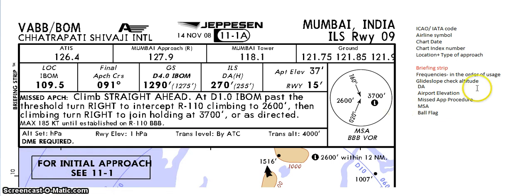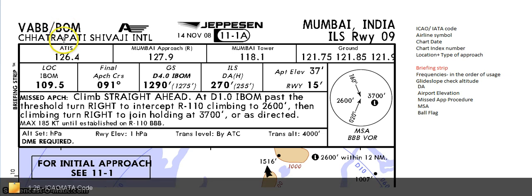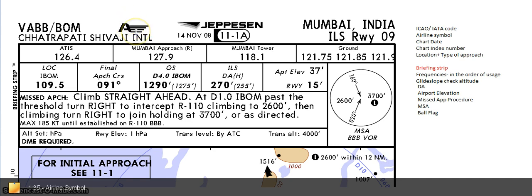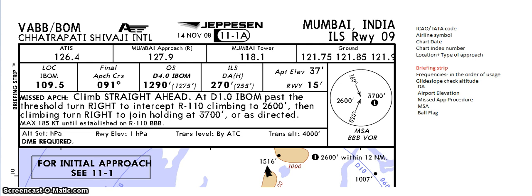For your convenience, on the right side of the page I have mentioned the most important things that we would be covering. In the top left you can see VABB slash BOM — the first one is the ICAO code for Mumbai and the second one is the IATA code. You can also see the name of the airport, Chhatrapati Shivaji International Airport, and the symbol of the airline for which this chart was made.